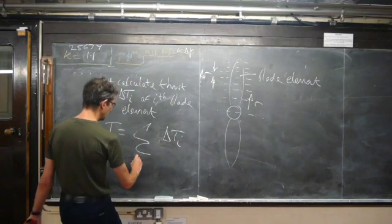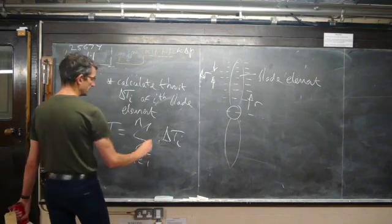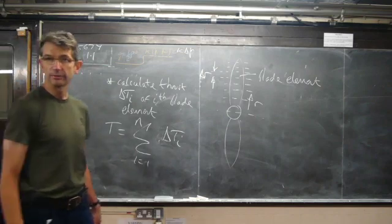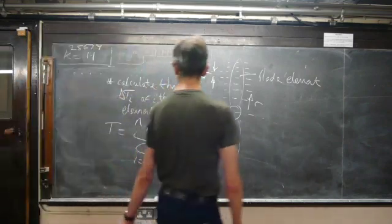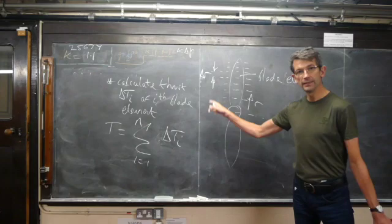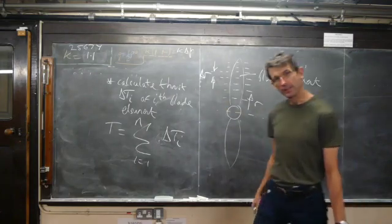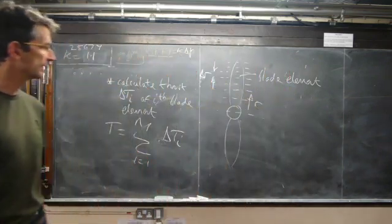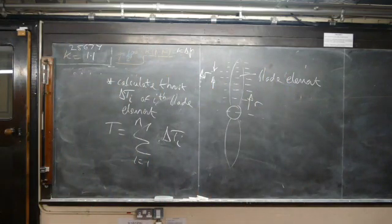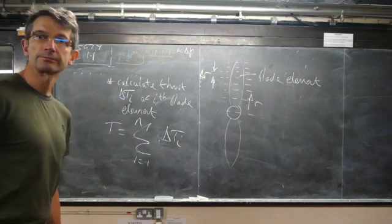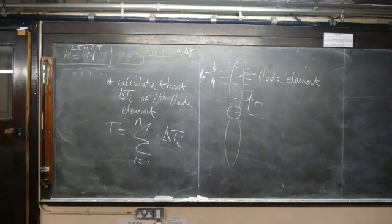Delta Ti, i equals 1 to n, for n blade elements. So we develop this theory for this blade design methodology in the notes. We do the same for the torque as well. That just summarizes what we're doing for the blade element theory.